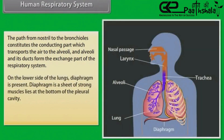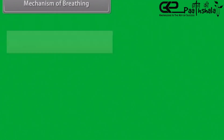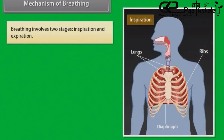On the lower side of the lungs, the diaphragm is present. The diaphragm is a sheet of strong muscles that lies at the bottom of the pleural cavity. The diaphragm is absolutely necessary to the respiratory system. Mechanism of breathing involves two stages: inspiration and expiration.